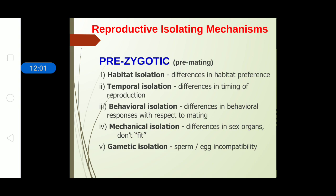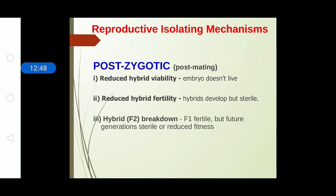Behavioral isolation involves differences in responses — for example, the cuckoo gives out a specific call for its mate during mating season; other nearby birds cannot perceive the signal and as a result cannot mate with the cuckoo. Mechanical isolation occurs when differences in sex organs mean they do not fit — the male reproductive organ cannot enter or ejaculate into the female counterpart. Gametic isolation occurs when sperm ejaculated into the female dies due to differences in physicochemical conditions.